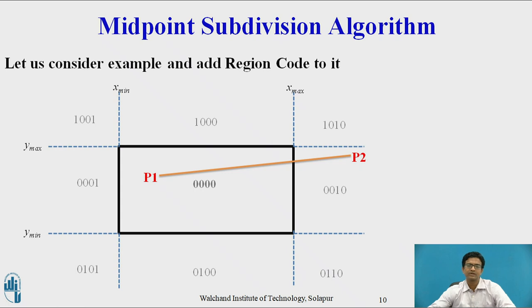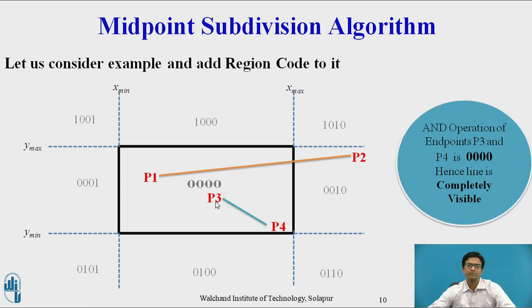Now consider line P3P4 where both endpoints have region code 0000. The AND operation of P3 and P4 gives 0000. Hence we can say that the line is completely visible.